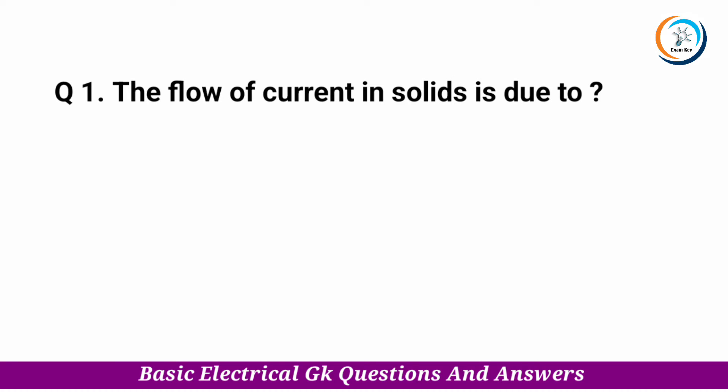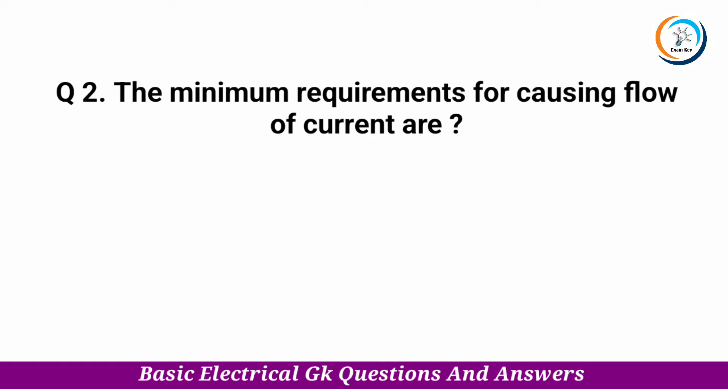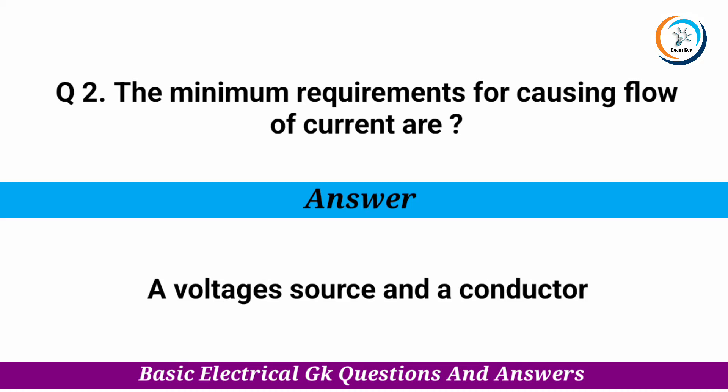The flow of current in solids is due to — Answer: electrons. The minimum requirement for causing flow of current are — Answer: a voltage source and a conductor.